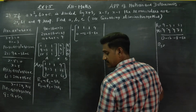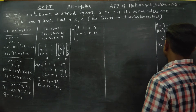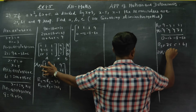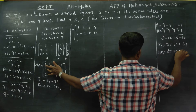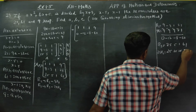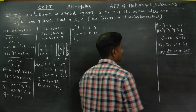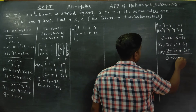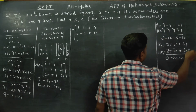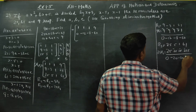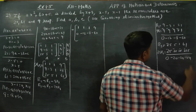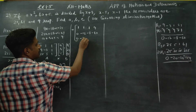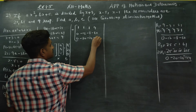Now applying R3 = R3 - 25×R1. R3 is 25, 5, 1, 61. Subtracting 25 times R1: 25-25=0; 5-25=-20; 1-25=-24; 61-225=-164. So the new third row is: 0, -20, -24, -164.